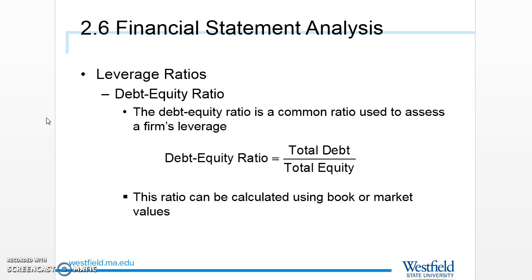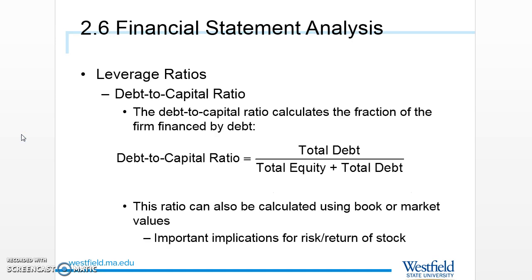The first leverage ratio is the debt-to-equity ratio, where we compare total debt relative to total equity. We can use either book value or market value — it doesn't matter which, but we must be consistent. We can also look at debt to total capital, which is debt compared to equity plus debt — essentially total debt compared to total assets — showing what percentage of the firm is financed by debt.